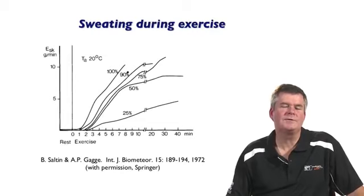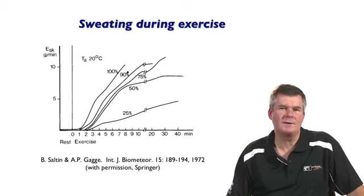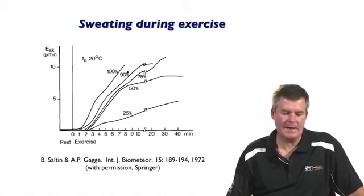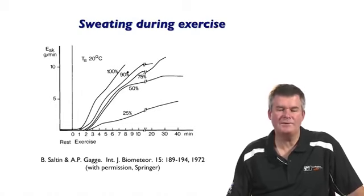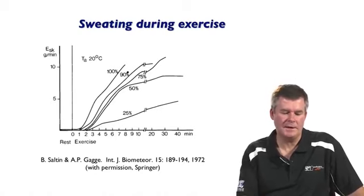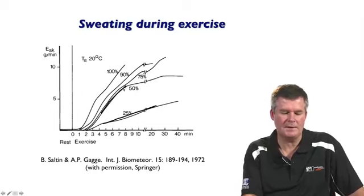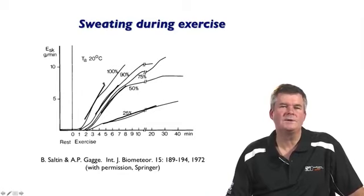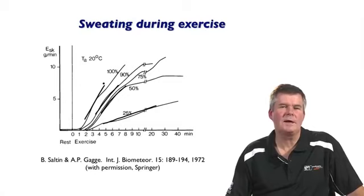In response to this increase in metabolic heat production, the main mechanism for losing heat is the evaporation of sweat. Here is the sweat response to exercise of about 40 minutes duration at different exercise intensities, expressed as a percent of VO2 max. As the exercise intensity increases, there are increases in sweating rates. So again, the sweat rate during exercise is directly related to the rate of metabolic heat production.